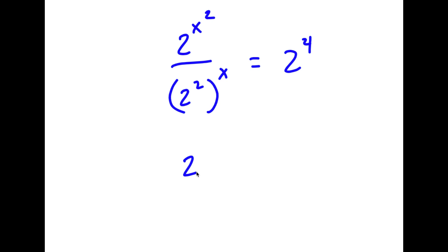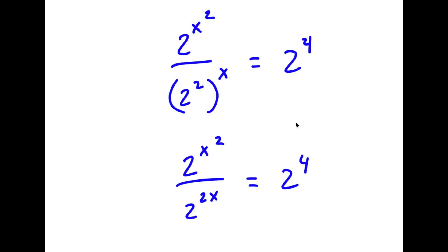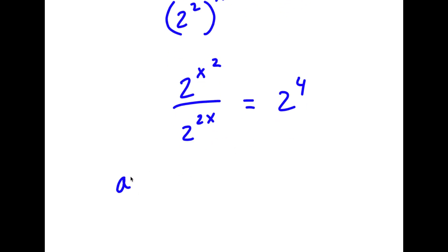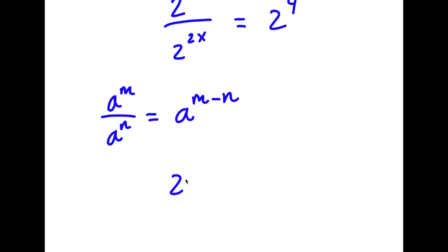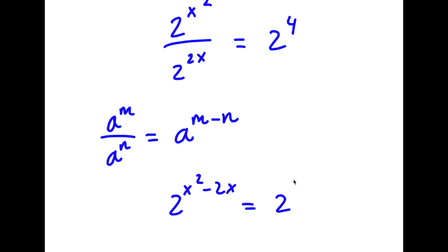This is the same thing as 2 to the power of x squared over 2 to the power of 2x is equal to 2 to the power of 4. Now if I have something in the form a to the power of m over a to the power of n, this equals a to the power of m minus n. So 2 to the power of x squared over 2 to the power of 2x equals 2 to the power of x squared minus 2x, which equals 2 to the power of 4.